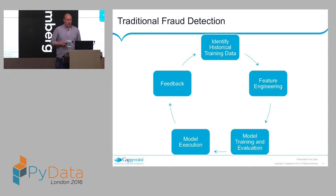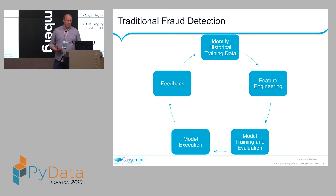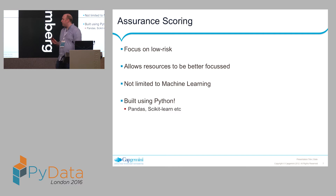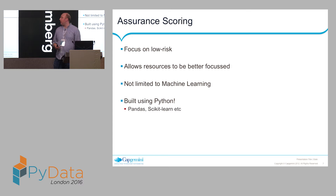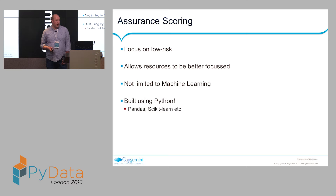With assurance scoring, we focus on people who are not committing fraud, which allows resources to be better focused. It's not limited to machine learning — machine learning is at its core, but we add a number of steps after the machine learning phase to make sure our low-risk cases really are low risk. I'll talk through that shortly. All of this is built using Python, of course, using standard libraries — pandas, scikit-learn, and so on.